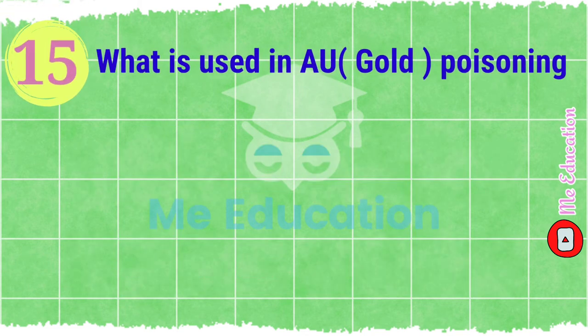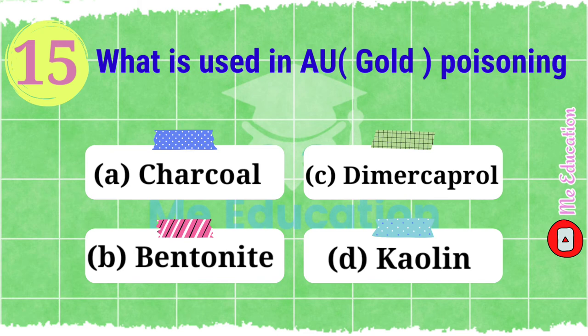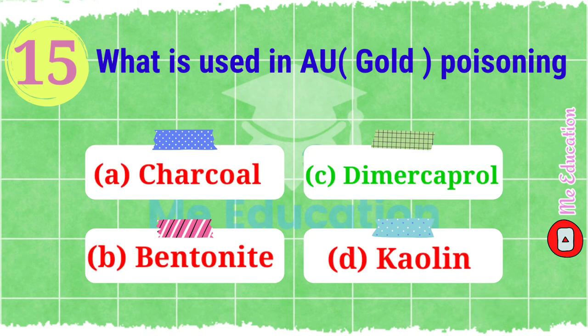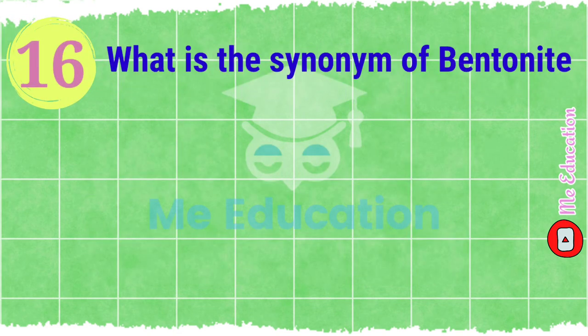Question number fifteen: what is used in gold (Au) poisoning? Options: A) charcoal, B) bentonite, C) dimercaprol, D) kaolin. Pause the video and try to solve. The right answer is option C, dimercaprol.